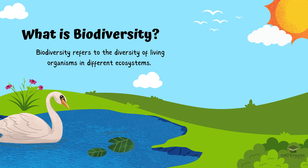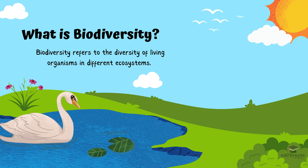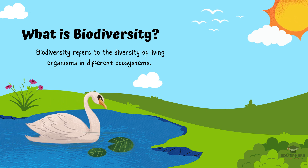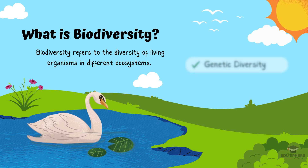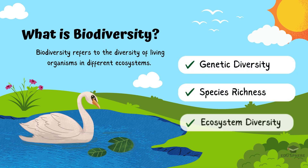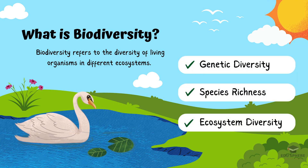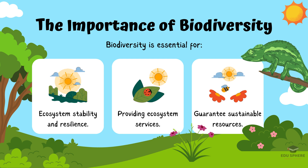Biodiversity refers to the variety of living organisms in different ecosystems. It includes three main components: genetic diversity, species richness, and ecosystem diversity. Each of these components plays a crucial role in maintaining the balance and health of our planet.